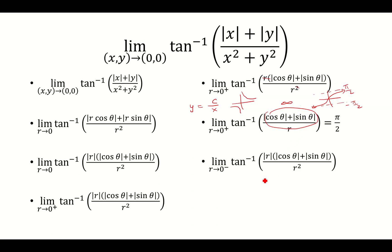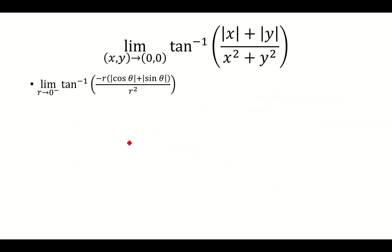And now if we're looking at r approaching 0 from the left, this absolute value of r becomes negative r. Because the absolute value of r is r if r is greater than or equal to 0, and negative r if r is less than 0. And since we're approaching it from the left, that's going to equal negative r, and then we're going to cancel out the r.